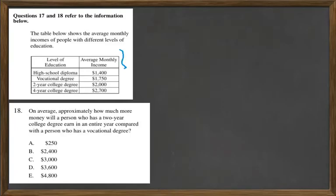Question 18 also refers to this chart. It says, on average, approximately how much more money will a person who has a two-year college degree earn in an entire year compared with a person who has a vocational degree?